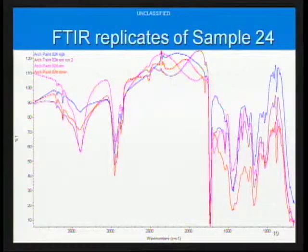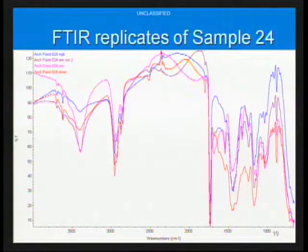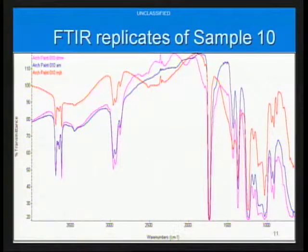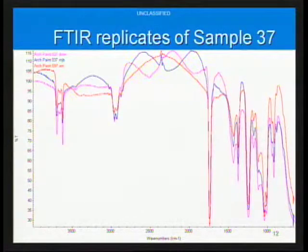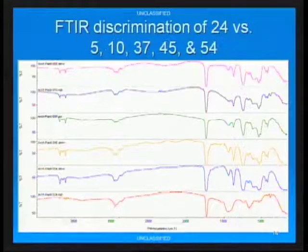Here I'm showing replicates of one particular sample — you can see some variation, likely due to sample prep and over absorbance, where someone put too much sample in the diamond cell. Here's another sample; again there's a bit of over absorbance in the kaolin region, but these are all replicate analyses of one sample. And here's a comparison of those last two — there may be some subtle differences in certain areas, but nothing we're going to call as discriminating at this stage.